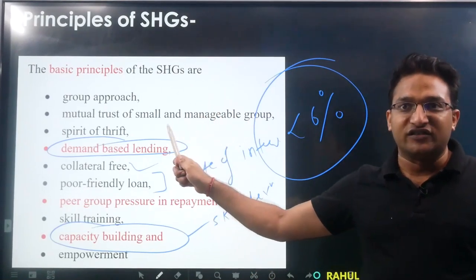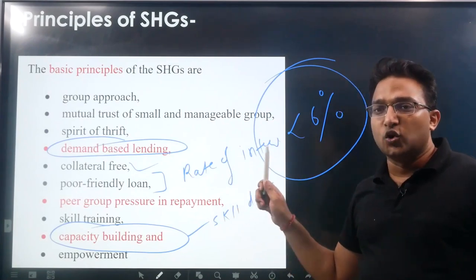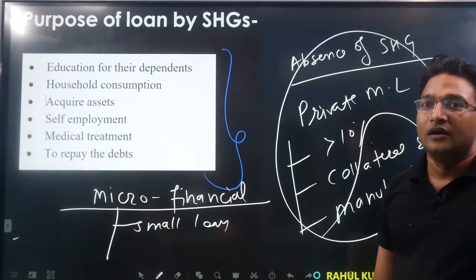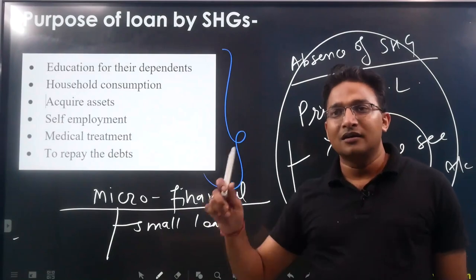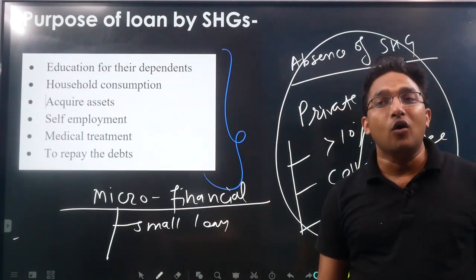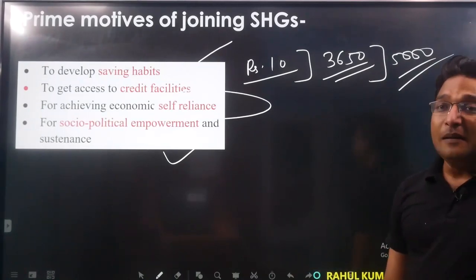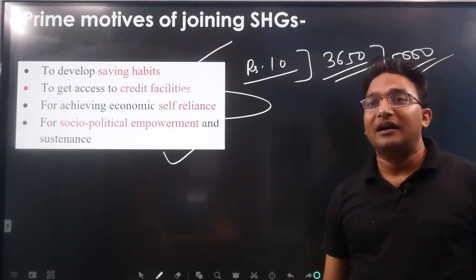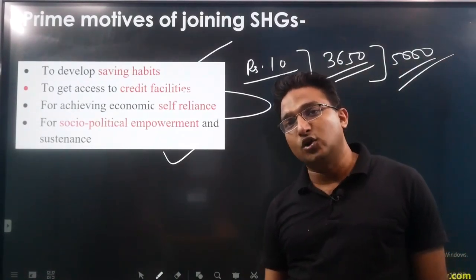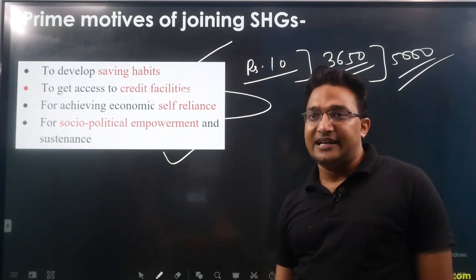Principles of self-help groups primarily include demand-based lending, spirit of thrift, peer pressure, group-based repayment, and capacity building. The purpose of the loan can be anything, but the main thing is that members are now out of the clutch of private money lenders. The prime motive is multi-fold — from saving habits to credit facilities and self-reliance.